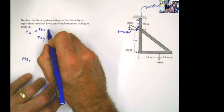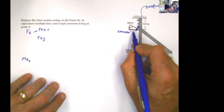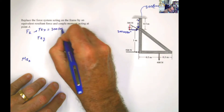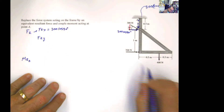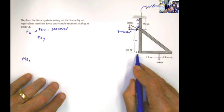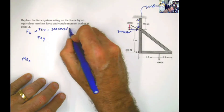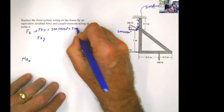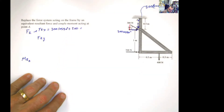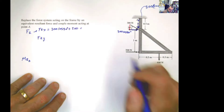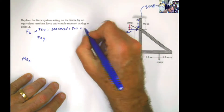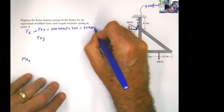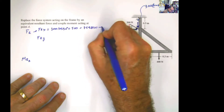So summation of forces in x: I have 300 cosine of 30, and I have this other force which is already acting in x — 500. The result in x will be 759.81 Newton acting to the right.